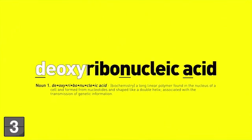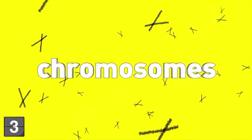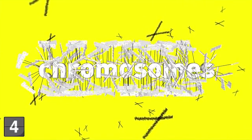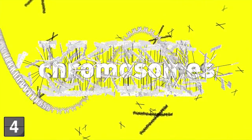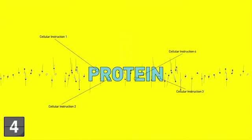DNA stands for deoxyribonucleic acid and these long strands are called chromosomes. Chromosomes are made up of many genes. One gene is a specific sequence of DNA on a chromosome that provides a particular cellular instruction.